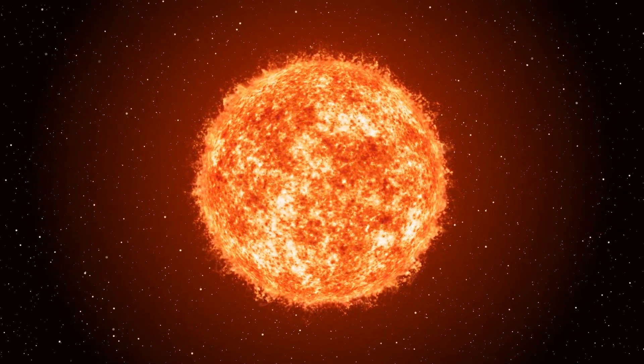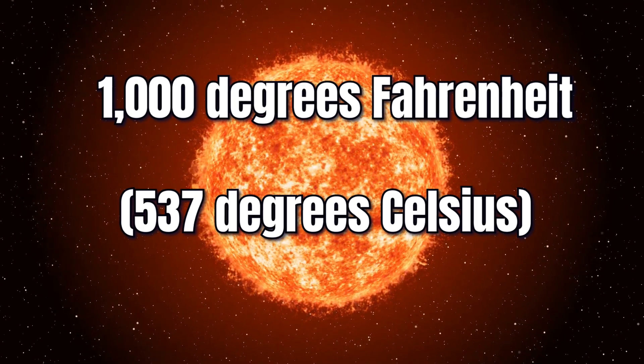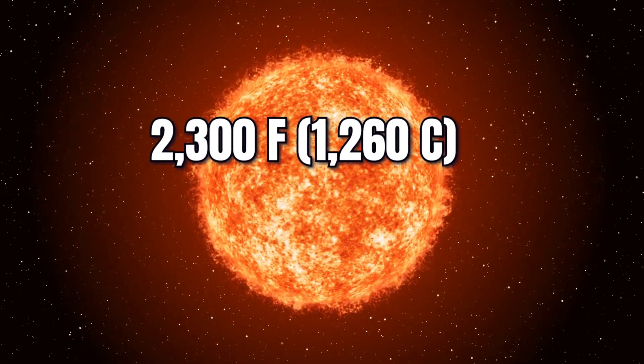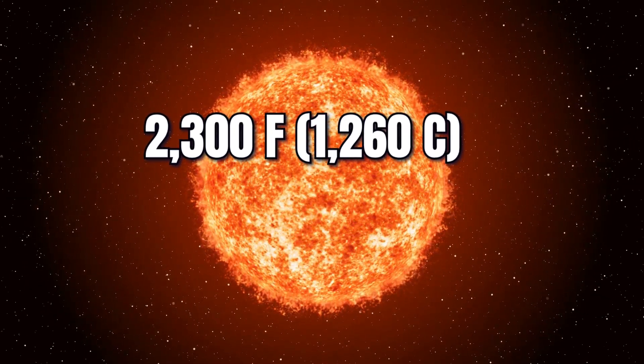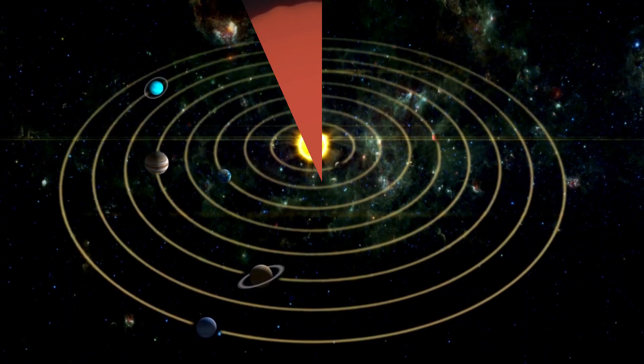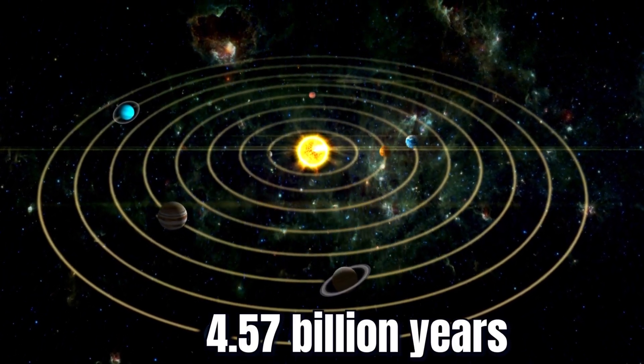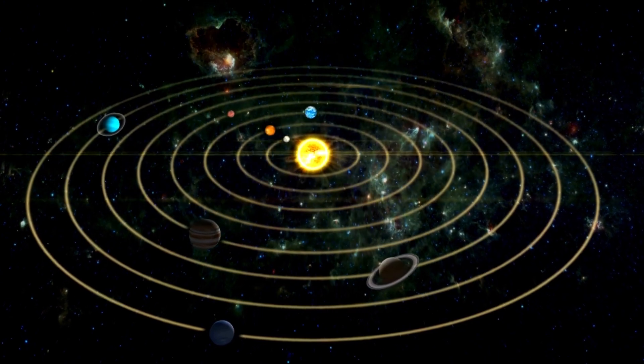The objects' temperatures range from 1,000 degrees Fahrenheit, or 537 degrees Celsius, to 2,300 degrees Fahrenheit, or 1,260 degrees Celsius, and they are relatively young, only about 1 million years old. Compared to our solar system, which is 4.57 billion years old, these objects are still in their infancy.